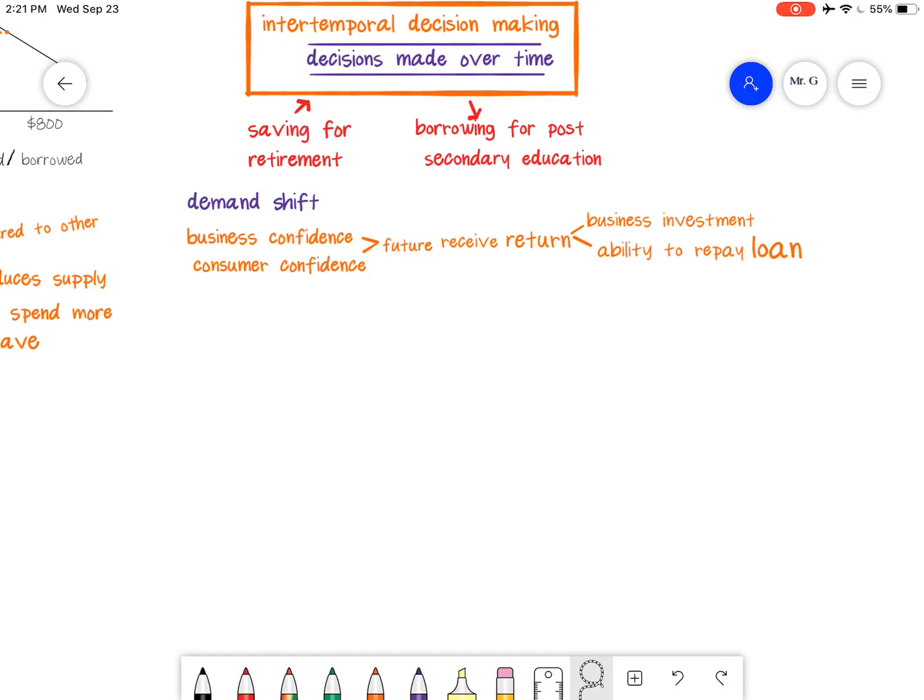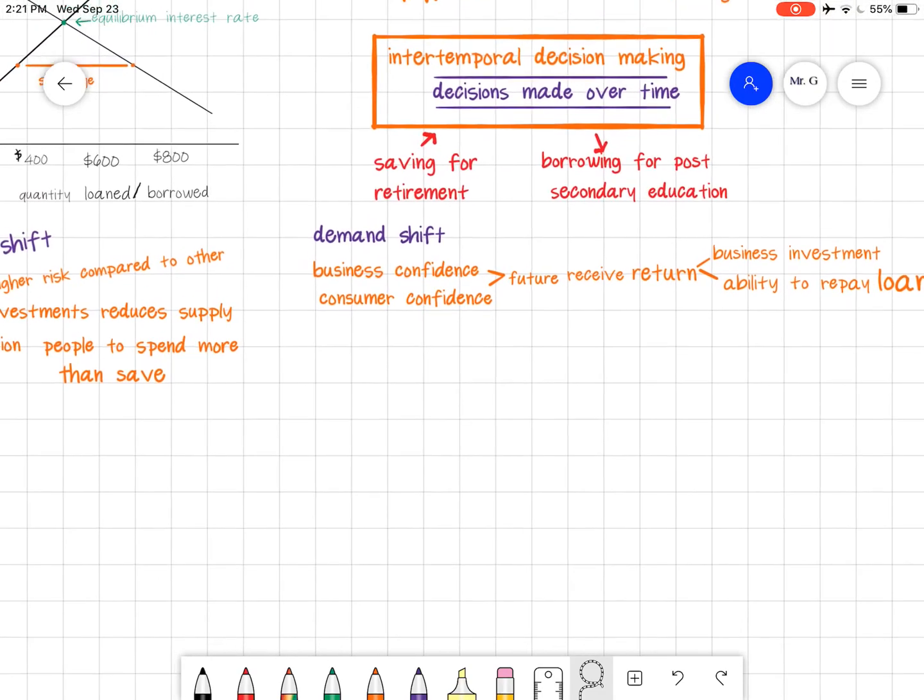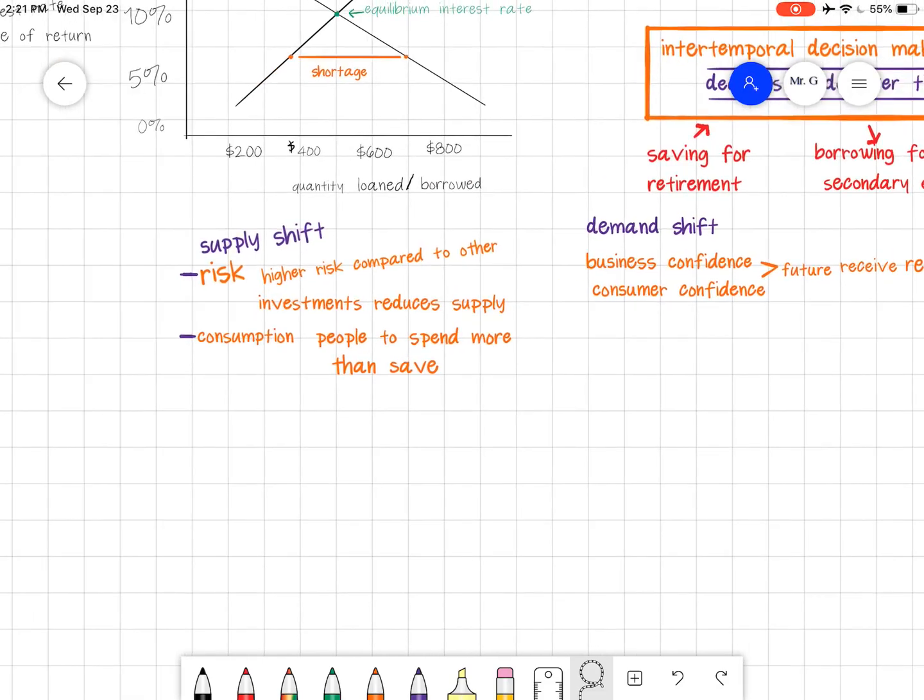However, if they're like, things are really going to improve, I have this great idea, then they'd be more inclined to borrow now. Consumer confidence, if people are uncertain about their job or whatever, they're not as likely to borrow money for their houses. But if they got a great job and everything's going well and earning lots of money, they would have more confidence to take out that loan. So that can affect demand, which is basically about confidence.